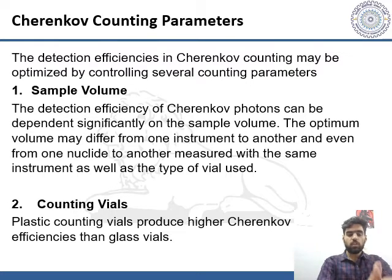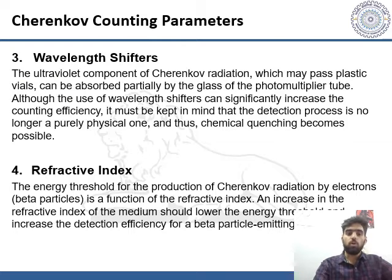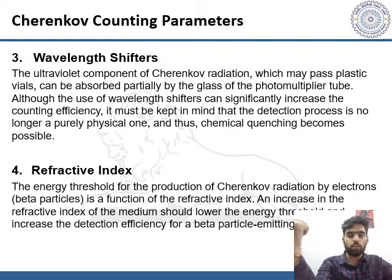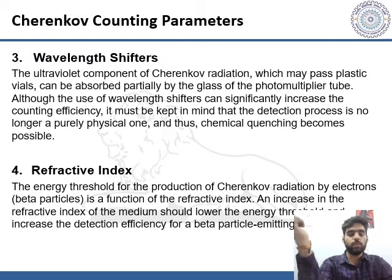Plastic counting vials produce higher Cherenkov counting efficiencies than glass vials, because the ultraviolet component of Cherenkov radiation may pass through plastic while it can be partially absorbed by glass of the photomultiplier tube. Although the use of a wavelength shifter can significantly increase counting efficiency, it must be kept in mind that the detection process is no longer a purely physical one, and thus chemical quenching becomes possible.